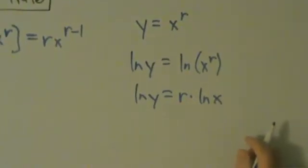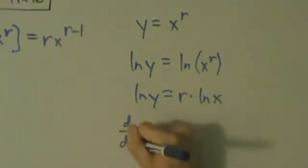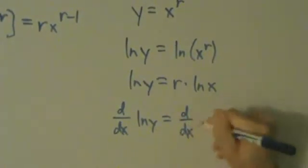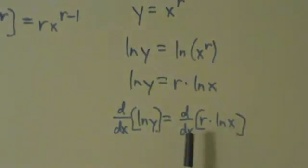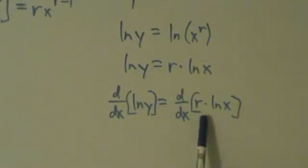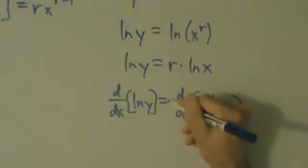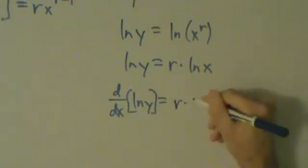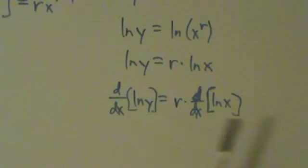Now let's take a derivative of both sides with respect to x. So d/dx of ln y equals d/dx of r times ln x. On the right-hand side, r is just a constant, so let's go ahead and pull it out of the derivative. So that's going to be r times d/dx of ln x. And we know that the derivative of ln x is just 1 over x.